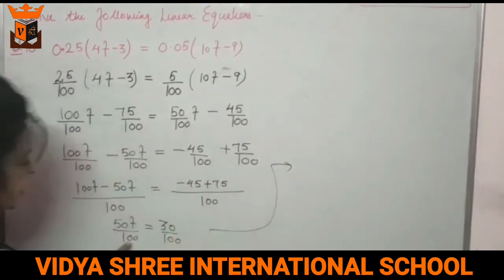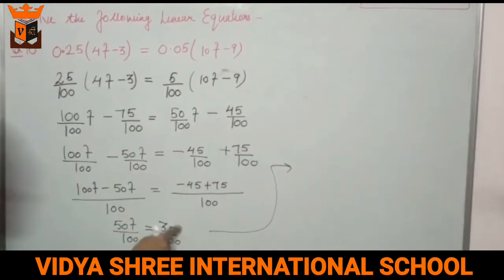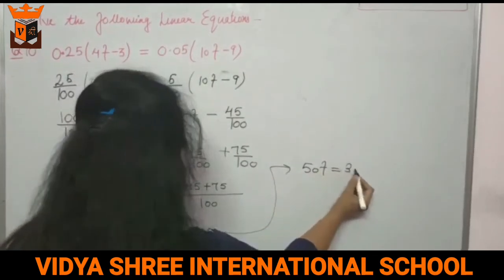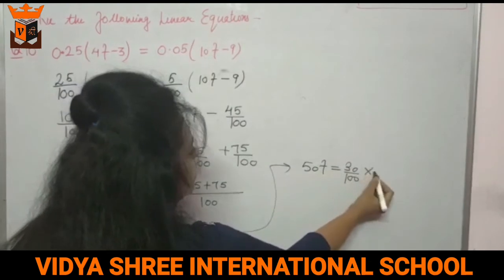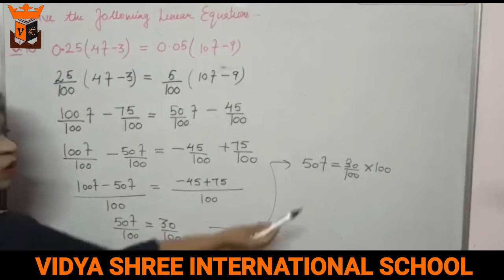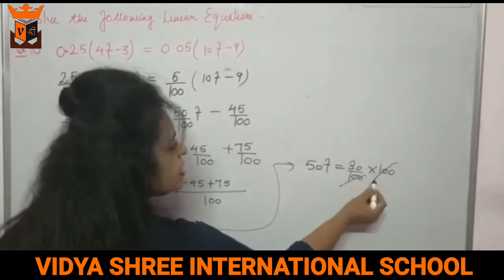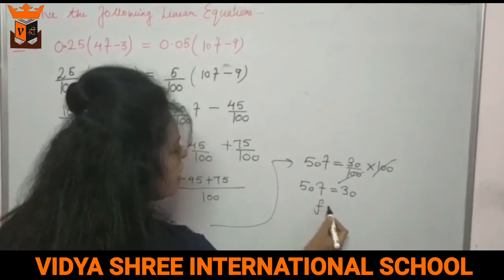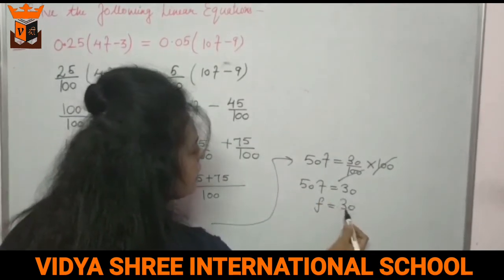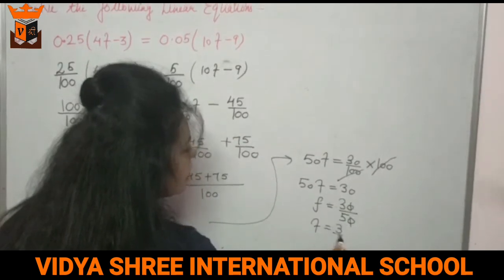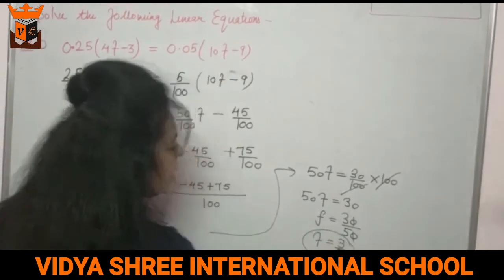The 100 on the left side goes to the right and multiplies, so 100 cancels 100. This gives 50F equals 30. Dividing both sides by 10, we get 5F equals 3, so F equals 3/5. That is the answer.